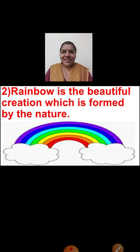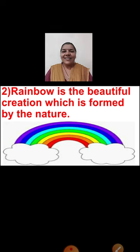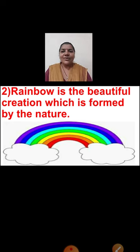See the next picture here. Our second point will be: Rainbow is the beautiful creation which is formed by the nature. When it rains, after the rains, we can see a rainbow in the sky. It is a natural creation, it is a creation of the nature, children. So the second point we can write: Rainbow is the beautiful creation which is formed by the nature.